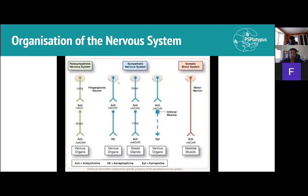The somatic motor system does not have a ganglion — it's just one long motor neuron that releases acetylcholine at nicotinic receptors at the skeletal muscle.